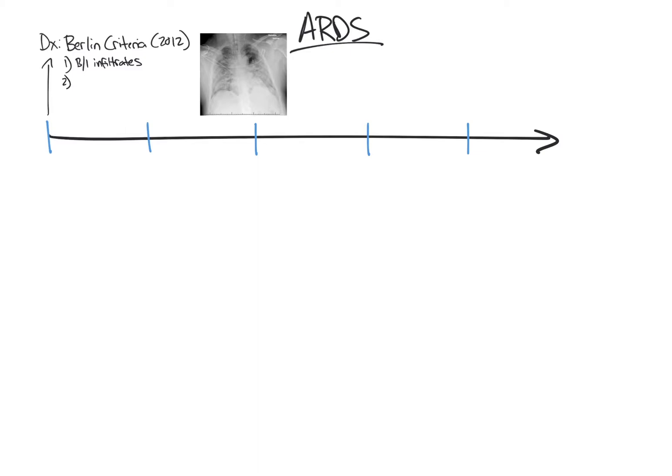Second, respiratory failure and alveolar infiltrates cannot be entirely explained by cardiogenic pulmonary edema. Third, the patient's PaO2 divided by FiO2 as a decimal, otherwise known as the P-to-F ratio, must be less than 300 on at least 5 of PEEP.